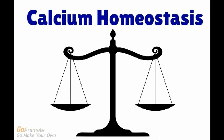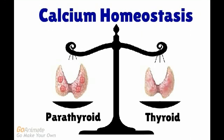The body works constantly to maintain stable, balanced conditions — this is known as homeostasis. There are two glands that work to maintain blood calcium homeostasis: the thyroid and the parathyroid gland. Both of these glands make and release hormones that work to maintain this balance.